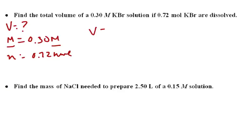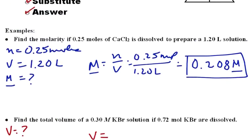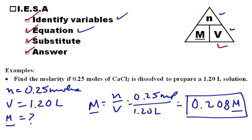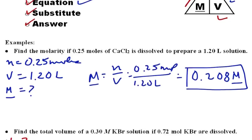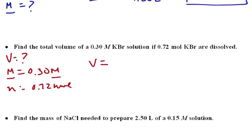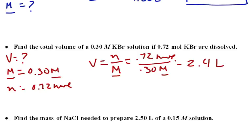So the equation is volume. We're looking for volume, so it's going to be number of moles divided by molarity. We substitute in our values, 0.72 moles and 0.30 molar. And then we get our final answer, which is 2.4 liters. Since we have volume, we know the volume is in liters.